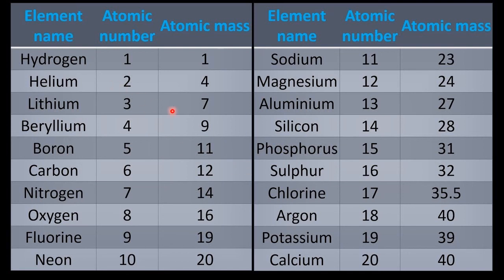This is the atomic number and mass number representation for the first 20 elements on the modern periodic table, starting from hydrogen and ending with calcium. To summarize: atomic number = number of protons; mass number = number of protons plus number of neutrons. Please go through this table and we will move to the next concept in the next session.